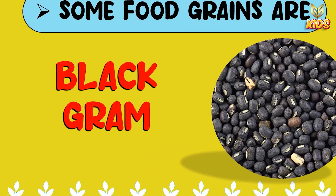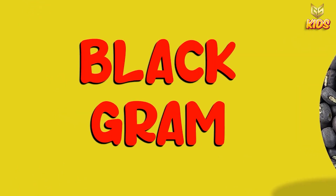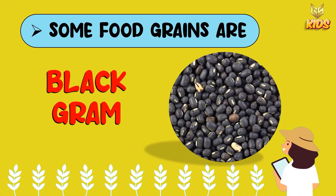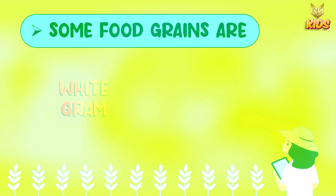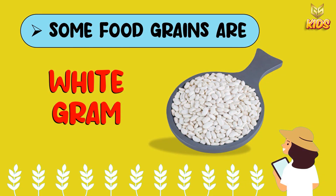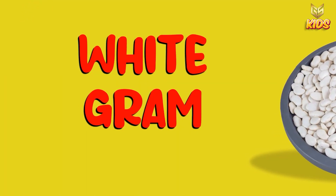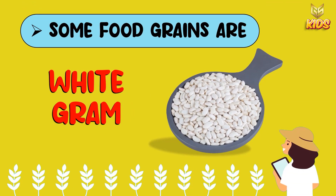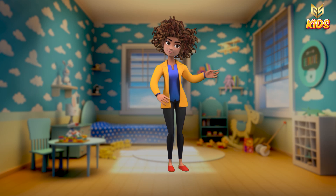Next we have black gram — B-L-A-C-K black, G-R-A-M gram. This kind of food grain is called black gram; those are black in color. Next we have white gram — W-H-I-T-E-G-R-A-M. This is called white gram.